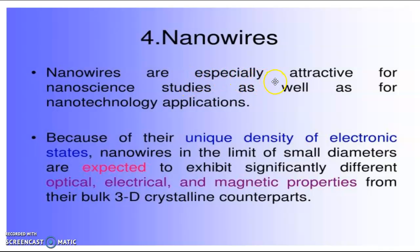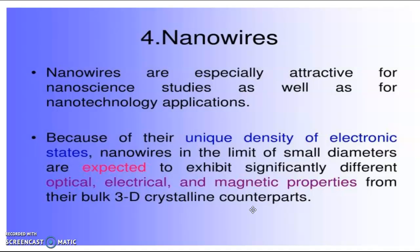Nanowires are especially attractive for nanoscience studies as well as for nanotechnology applications, because of their unique density of electronic states. Nanowires in the limit of small diameters are expected to exhibit significantly different optical, electrical, and magnetic properties from their bulk 3D crystalline counterparts. The diameter of a nanowire should be in the nanoscale, but the length may vary up to many micrometers or even meters. So we have only a diameter restriction for nanowires.